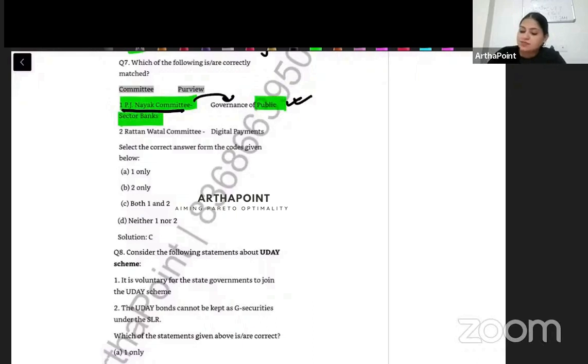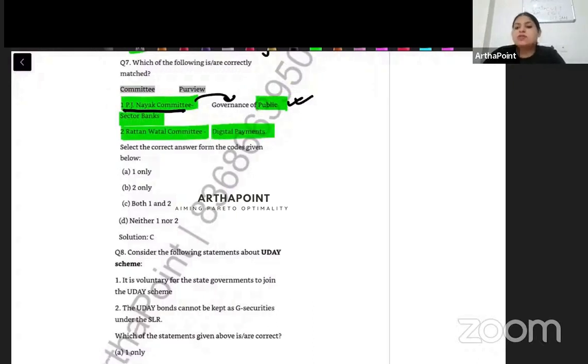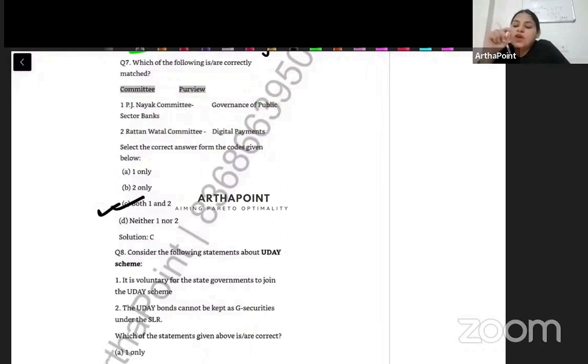And Ratan Watel Committee was formed to check on the digital payments. UPI and all that. For digital payments, the committee that was formed was Ratan Watel Committee. So both of them are correct. Both one and two. Please remember these names. Usually questions come asking which committee is related to governance of public sector bank, which committee is related to digital payment. You should know these committees.